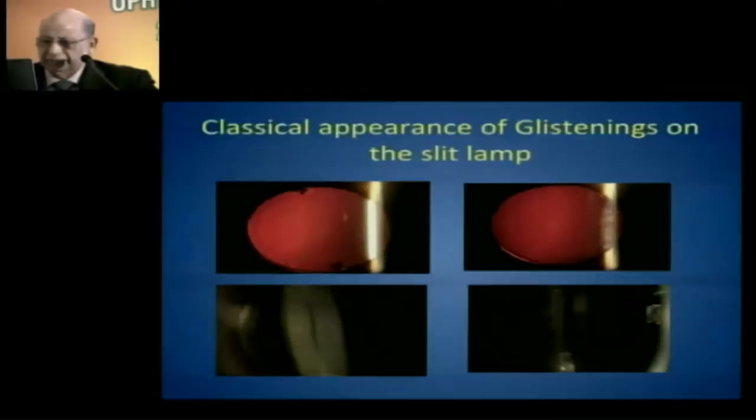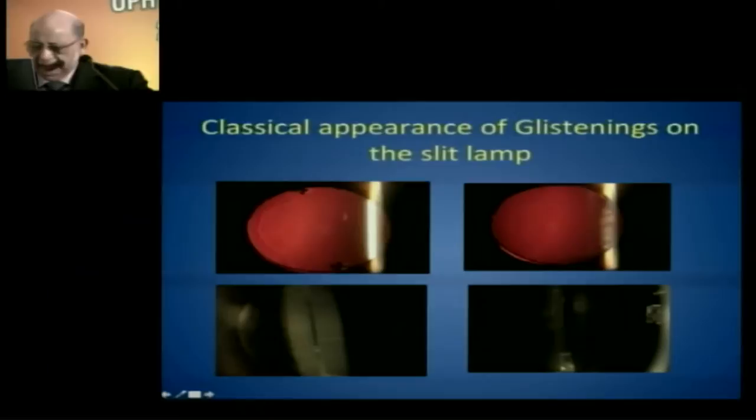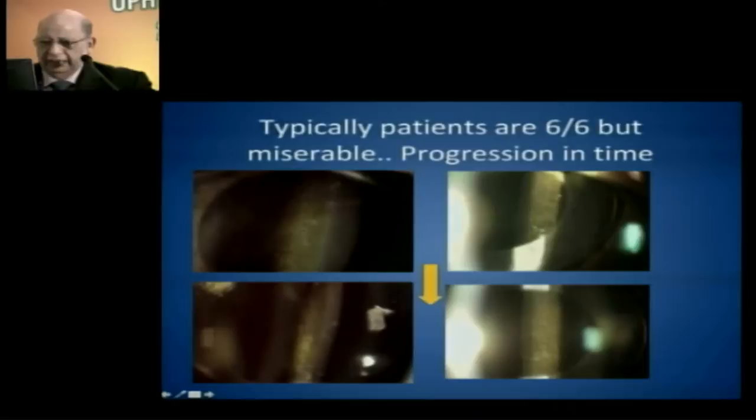This is the classical appearance of glistening on the slit lamp. You can see fine little spots running down the line. A lot of patients see 6/6 but complain and are uncomfortable. These are the little glistening spots you see on both sides, and this progressively increases over time.